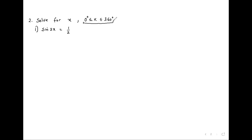Sine 2x equals half. The first thing you do: if x is being multiplied by anything, let the whole thing be another variable, say theta. So theta equals 2x. Then substitute: sine theta equals half. Go back to your special angles and check which of the special angles gives you half for sine. You'll find that theta equals 30, because sine 30 equals half.